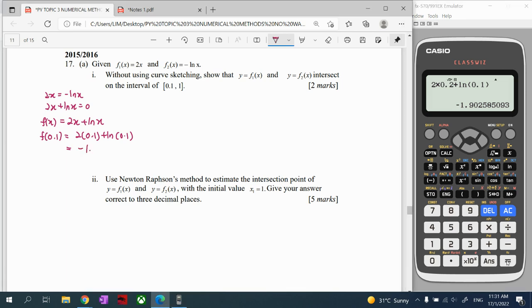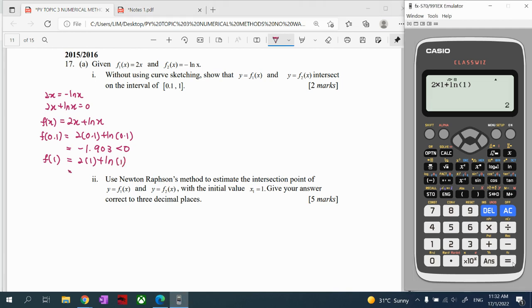Okay, so we will get negative 1.0, make sure three significant figures. So this is negative, less than zero. Then we substitute another value interval that we need to prove here, which is value of 1.